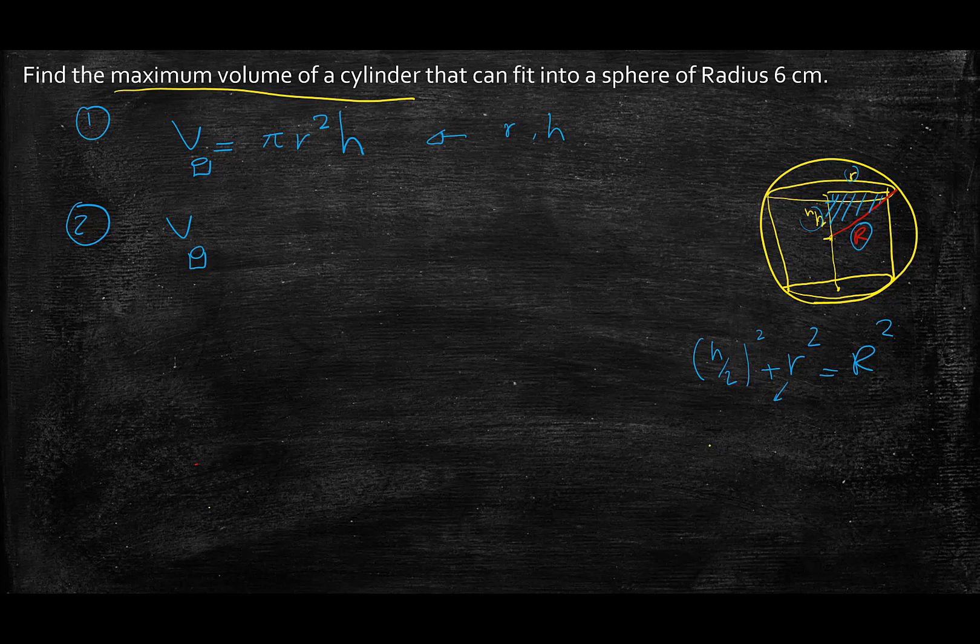Therefore I can rearrange for r² and write r² = R² - h²/4, and I can write this instead of r² in my original equation for the volume. Now R is given to be 6 centimeters and I'm going to plug that in at the last step. So I'm going to rewrite the volume equation: V = π(R² - h²/4)h.